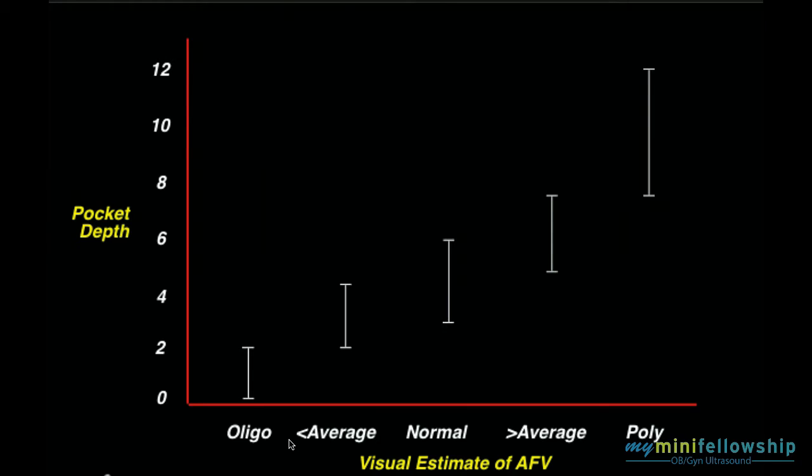Our visual estimate of fluid included oligohydramnios, when we thought the volume was abnormally low, polyhydramnios, where we thought the volume was abnormally high, and then normal. But in the normal range, we gave ourselves the opportunity to say it was normal but below average, or it was normal but above average.